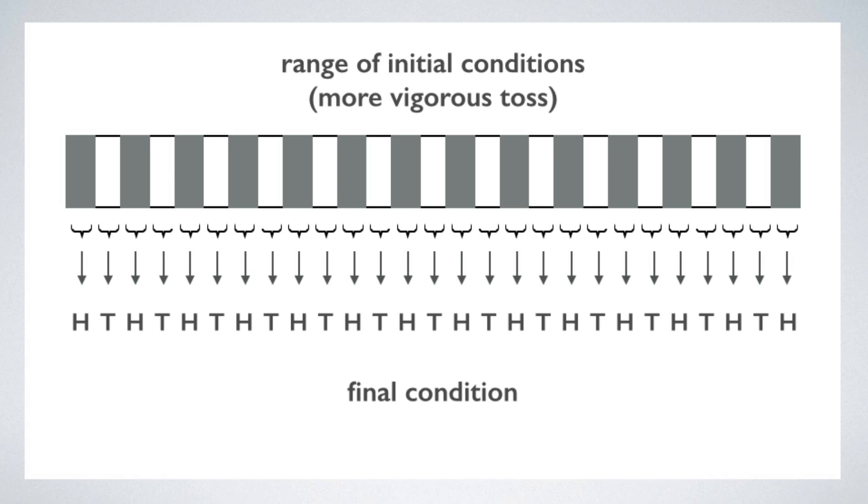This means that there's a point at which, for all practical purposes, you can treat the toss as random, either because you have no idea in which block a particular toss will issue from, or because the natural variation in the initial conditions, due to factors that you can't control, are greater than the width of these blocks.